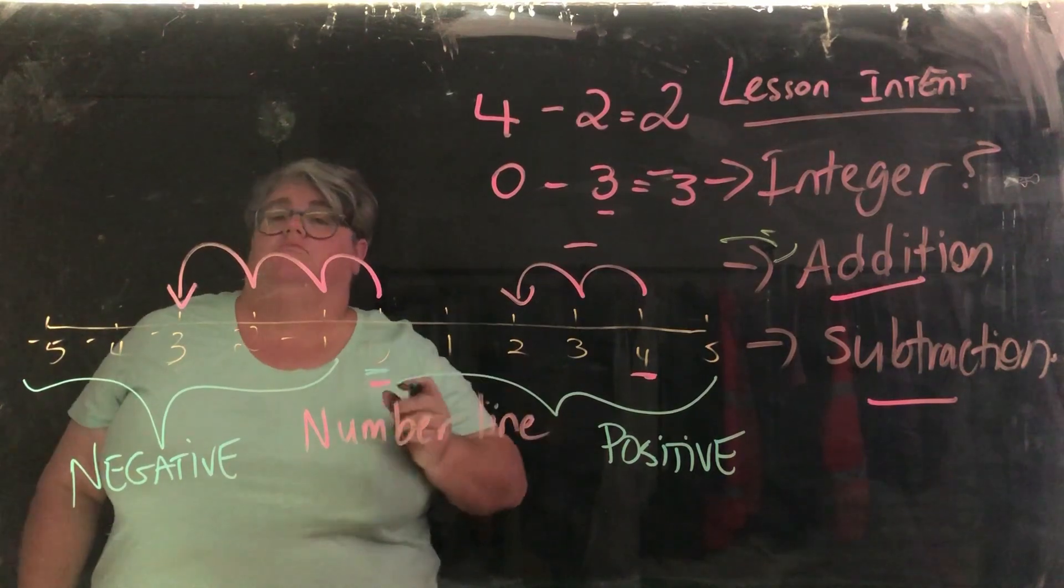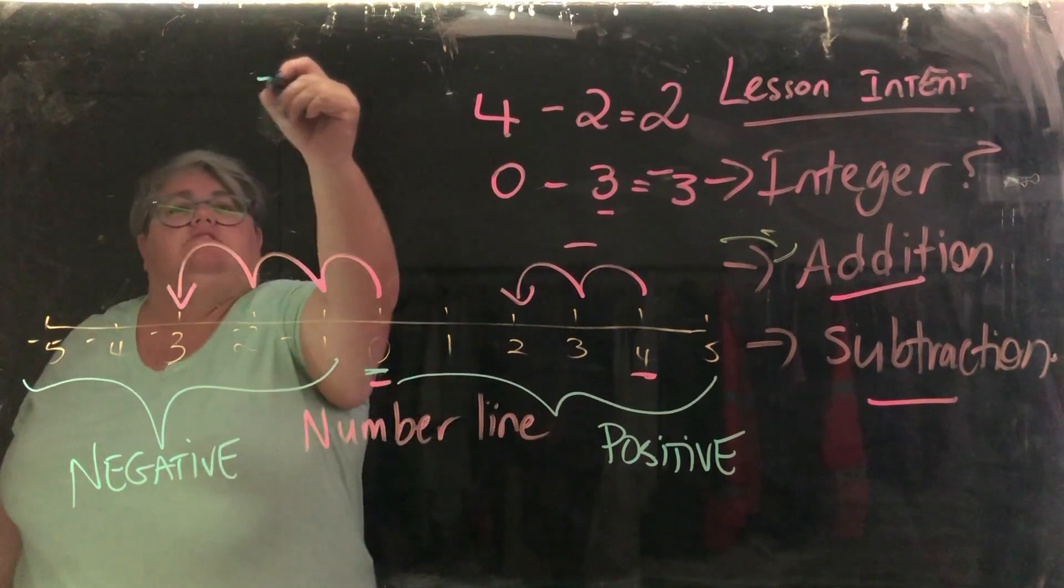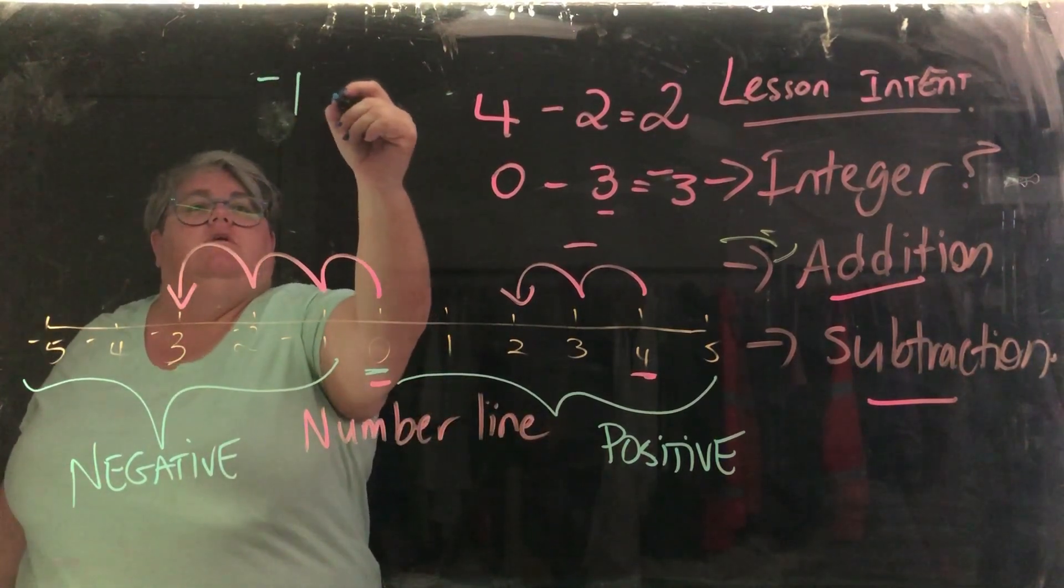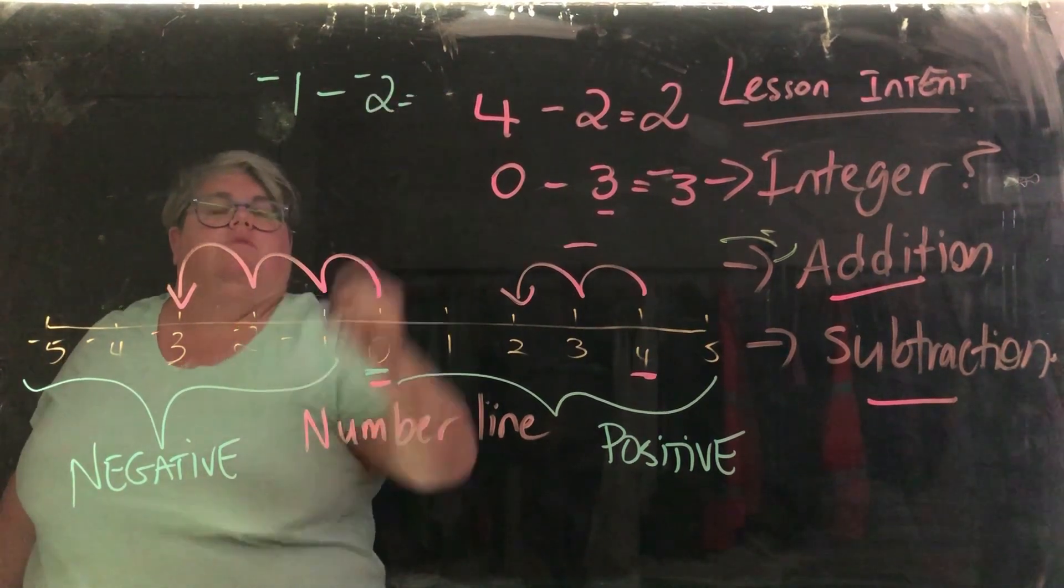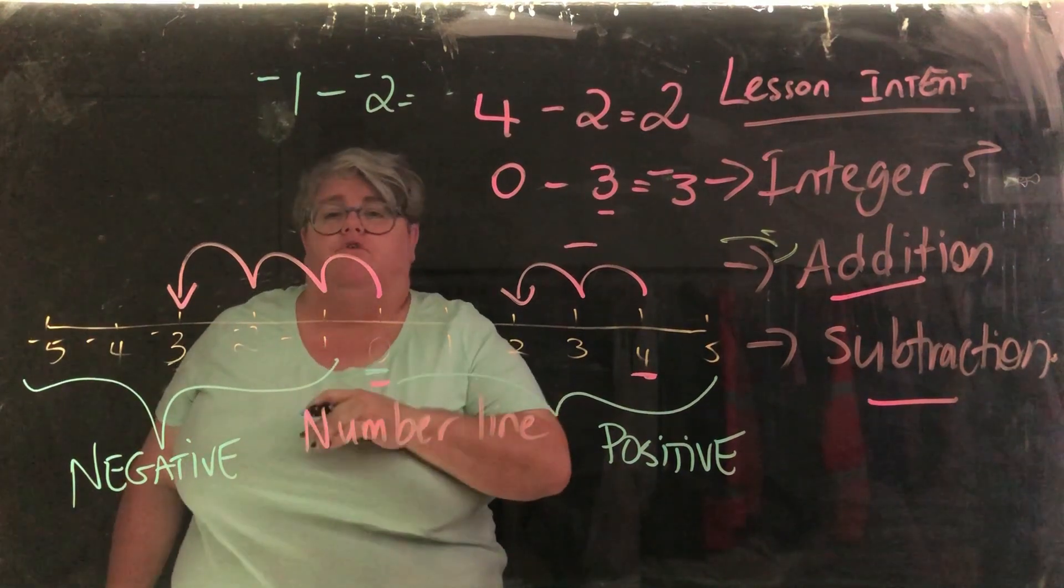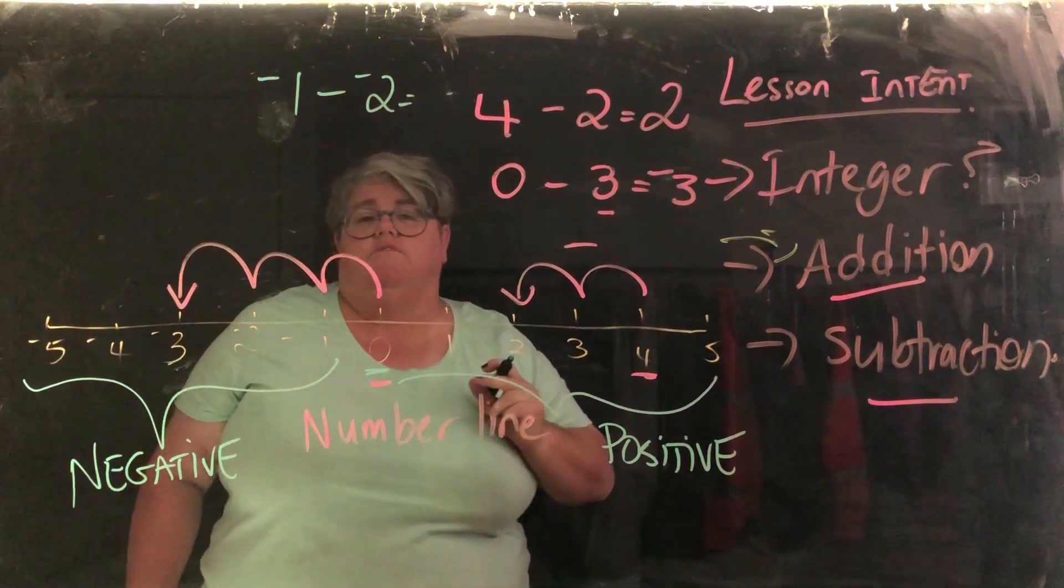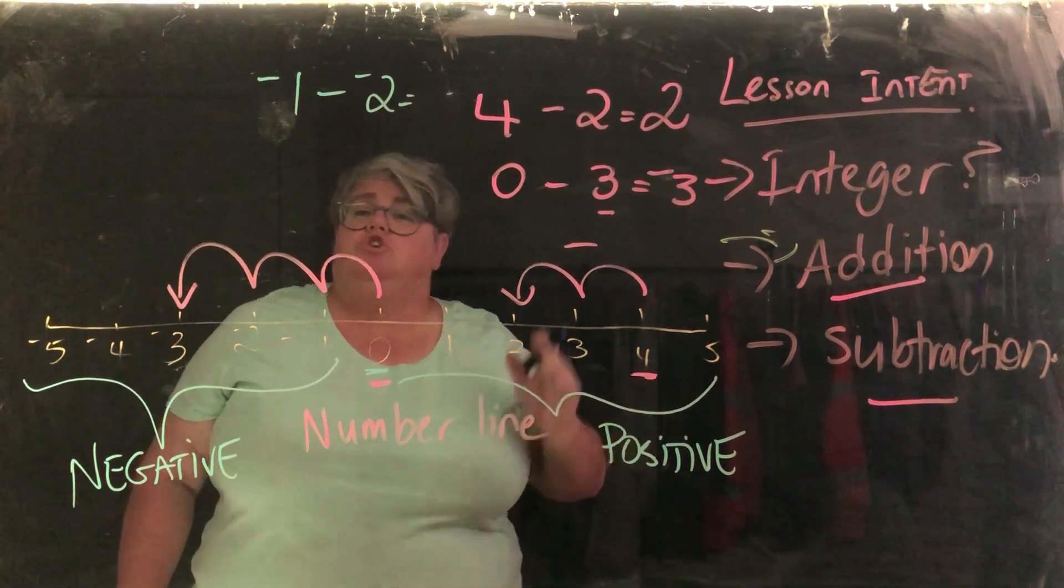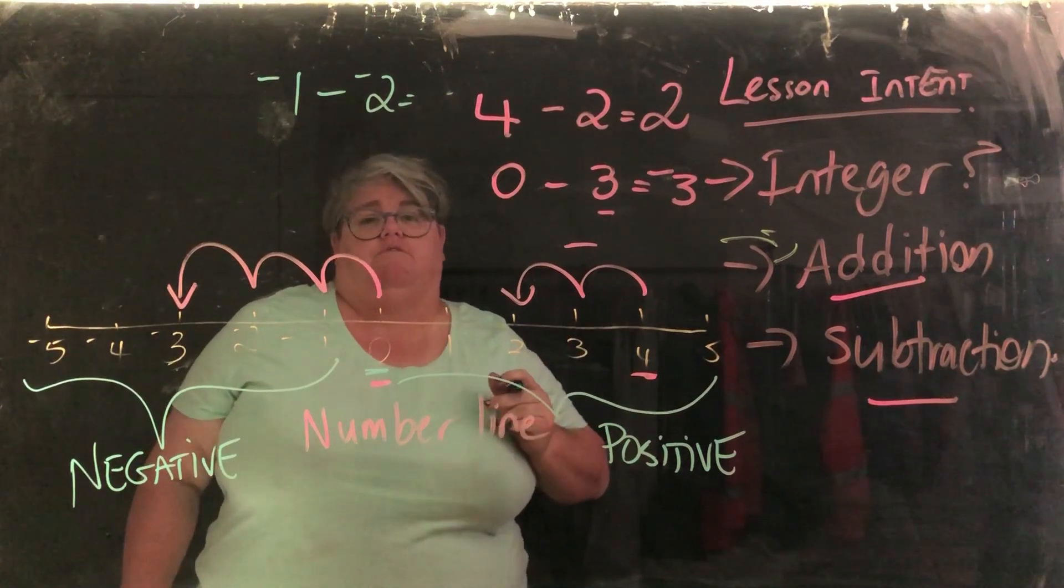So let's do one that's slightly more difficult. Let's say we start with negative 1 and we take negative 2. What do you think the answer is? Remember from before, 2 positives make a positive. 2 negatives also make a positive.